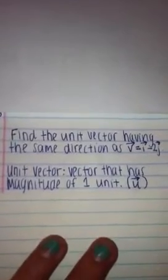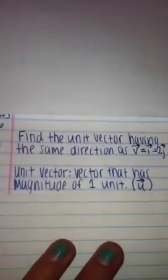A unit vector is a vector that has a magnitude of one unit and it can be defined as vector u.